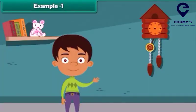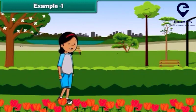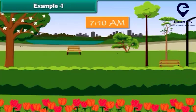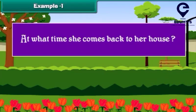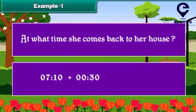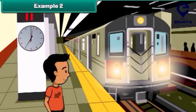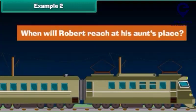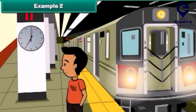Let us solve some interesting problems on time. Sarah goes for her morning walk at 7:10 AM and walks for half an hour. At what time does she come back to her house? To find the answer, we need to add 30 minutes to 10 past 7. The time will be 7:40 AM. Robert starts at 7 AM for his aunt's place by train, and the journey time is 12 hours. When will Robert reach his aunt's place? After 12 hours it will be 7 PM, so Robert will reach his aunt's station by 7 PM.